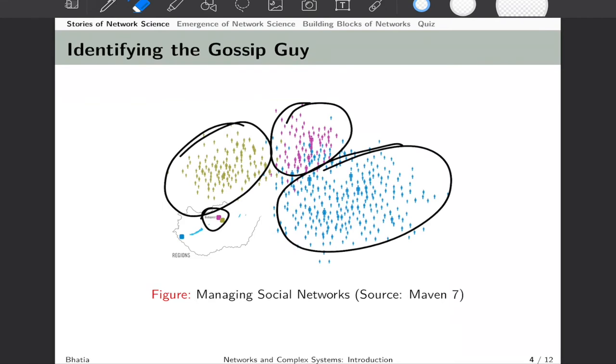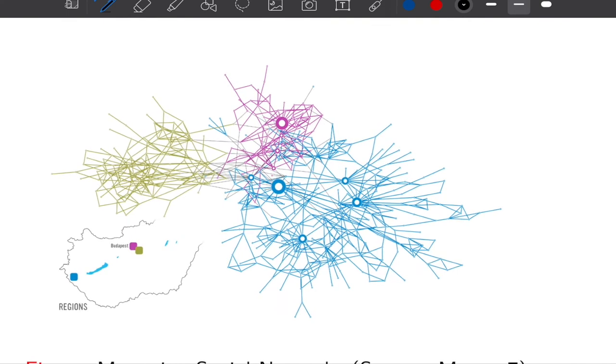To apply network science, Maven 7 needed to know the social network. They asked each employee whom they ask for advice and to whom they go when taking decisions. They also had access to company structure records. Why map this network? The company had a major internal communication problem. Higher management decisions were not arriving to workers, or what was arriving had nothing to do with the real decision, creating chaos.